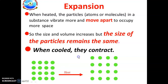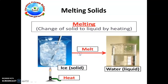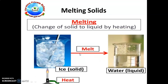The next process is melting solids. Melting means changing from solid to liquid by heating. When solids are heated even more strongly, they melt. Here you can see the ice: when the ice is heated more, that solid ice changes into liquid water — the process we name as melting.